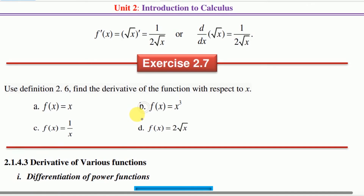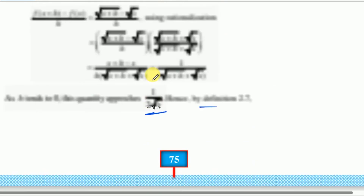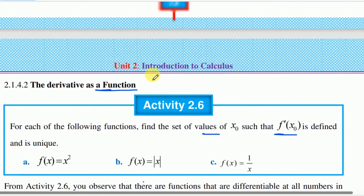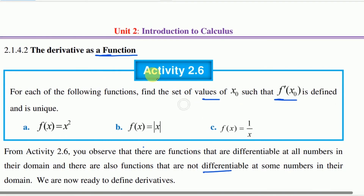This is Definition 2.60. The definition of 2.80. We compare the definition of 2.60. This is the definition relating to f derivative at x-naught — where x-naught is the value inside the definition.